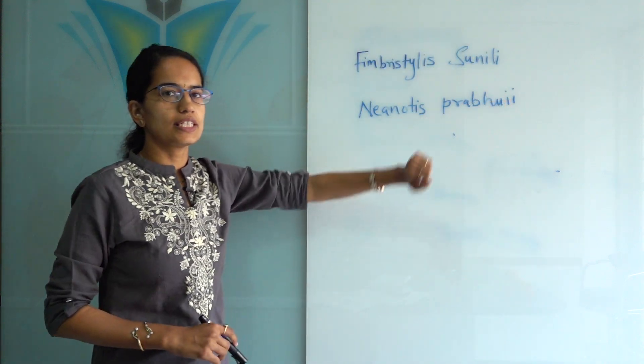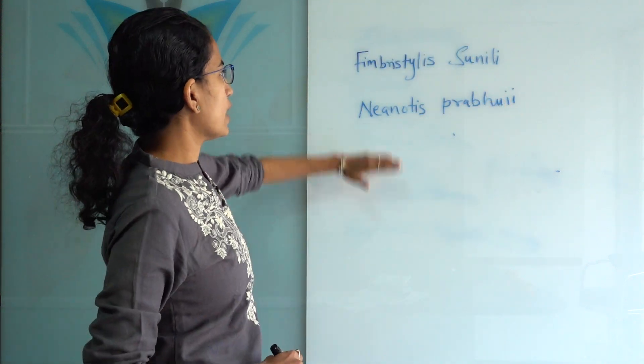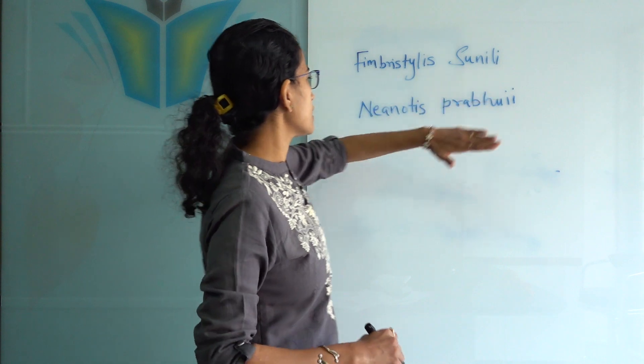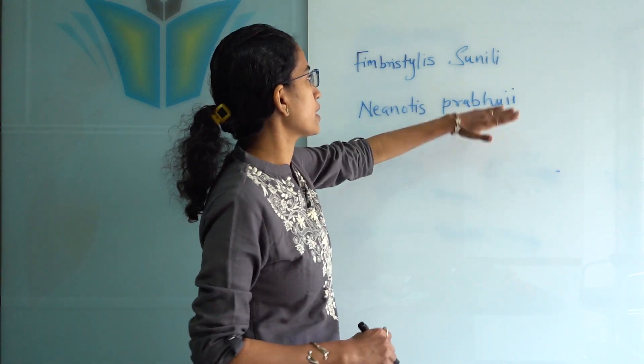Two new plant species have been discovered in Kerala. One is Fembrolitis sunnili, the other is Neonotus prabhai.